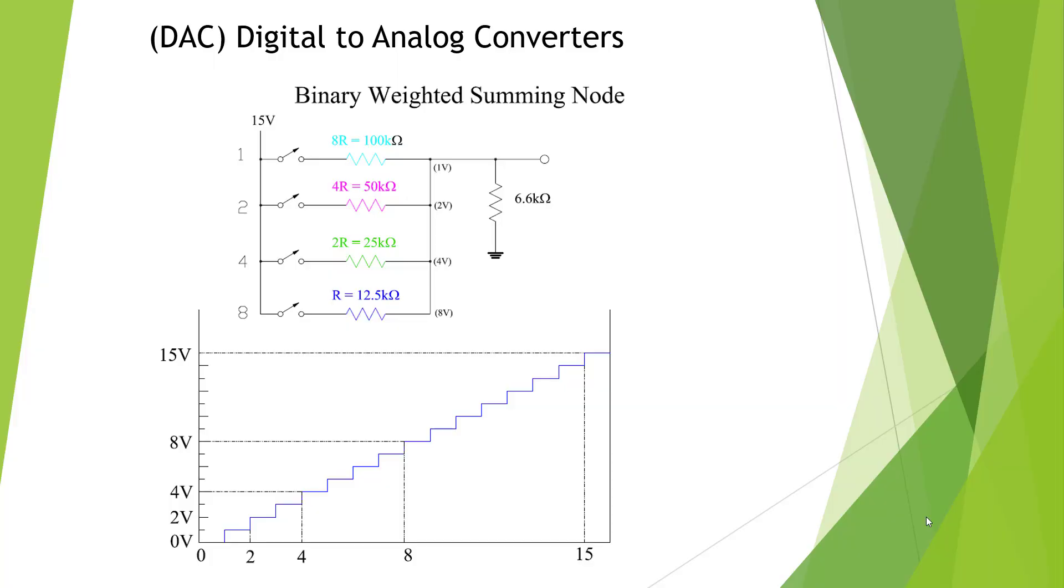Here's our presentation on digital to analog converters, also known as DACs. What we have here is a binary weighted summing node where our resistors all double in value and then we have a node where we can measure it.